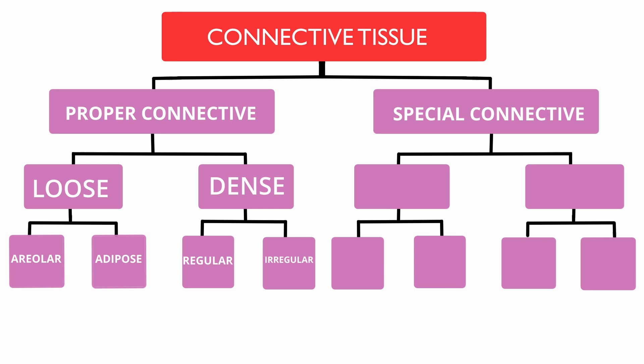Going back to the first level of classification, we have two types of specialized connective tissue: skeletal connective tissue and fluid connective tissue. Skeletal connective tissue has bone and cartilage, whereas fluid connective tissue has blood and lymph.